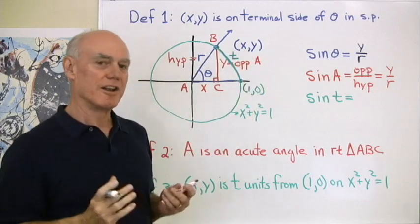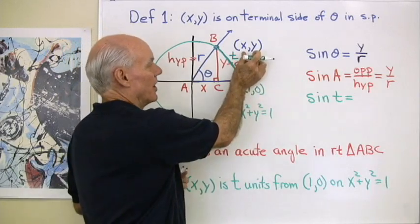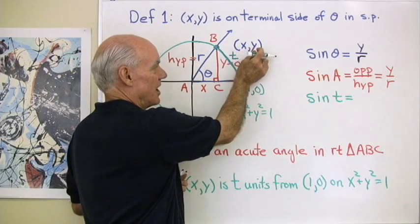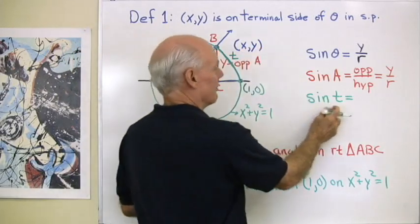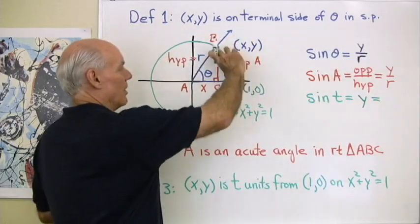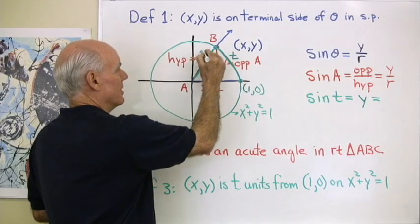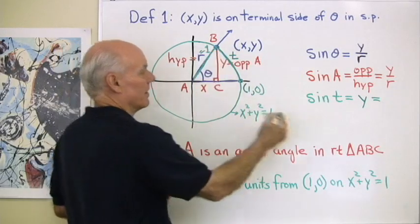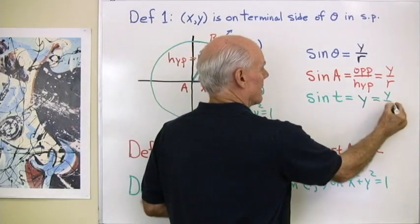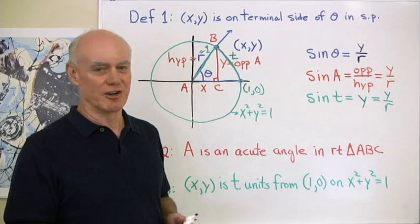So according to that definition, when you're on the unit circle the coordinates of this point XY are cosine T, sine T. So sine T over here is equal to just that Y coordinate. But that Y coordinate when I'm on the unit circle, this R right here is equal to 1. So it again is Y over R. So you see all three definitions are equivalent.